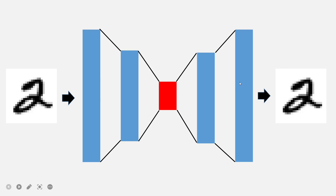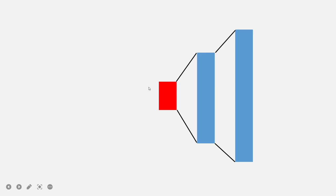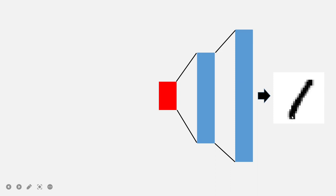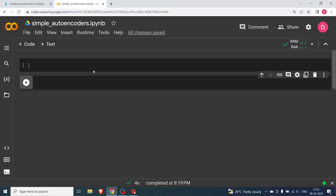Once the network is fully trained, the encoder part is removed and we only use the decoder to generate new samples. In the next video we will do VAE — variational autoencoders — where we will actually be able to generate plausible images. Here we will have some problems but we will still be able to generate images. By giving some values in the bottleneck layer you can generate new digits that are not in the dataset.